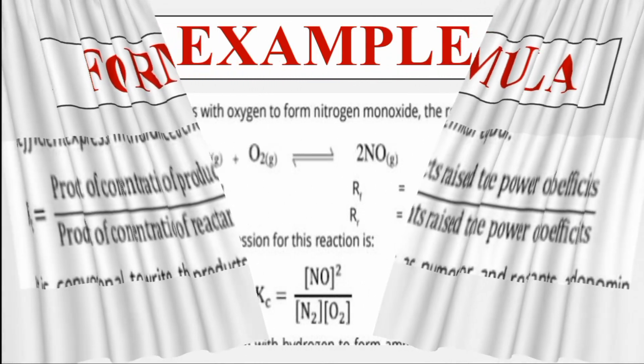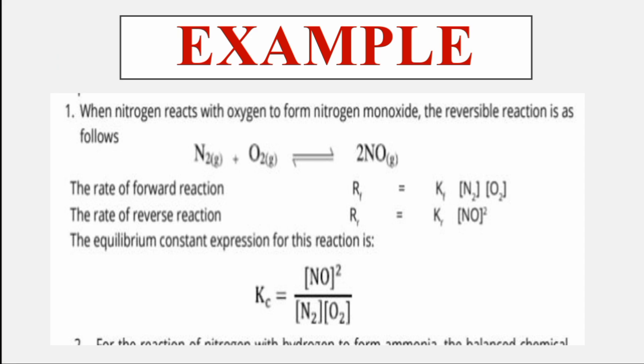Example دیکھیں: nitrogen اور oxygen آپس میں react کر کے nitrous oxide (NO) بنا رہے ہیں۔ Forward reaction وہ ہے جو left to right جاتا ہے جس میں reactants سے products بنتے ہیں۔ آپ نے previous lectures دیکھنے ہیں کیونکہ یہ interlinked topics ہیں۔ Forward reaction میں reactants N2 اور O2 ہیں، اور reverse reaction میں NO آتا ہے۔